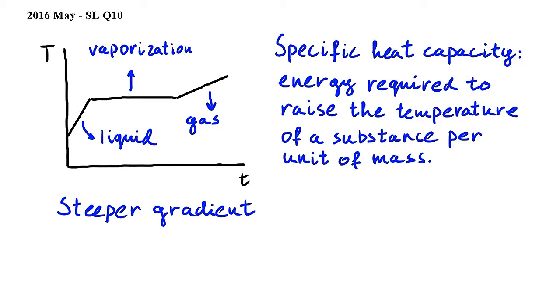In the second horizontal stage the substance is undergoing a phase change. It's changing from liquid to gas, in other words it's vaporizing. In the third stage the substance is in gas form and its temperature is increasing.